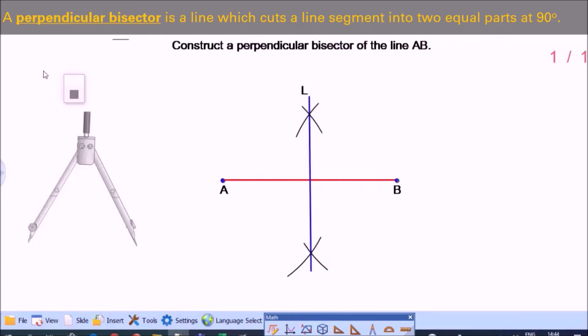You can erase some parts, but you have to leave your construction arcs. Your work should show where the arcs cross each other. Now mark the intersection of the line L and AB. This is the midpoint of the line segment AB.